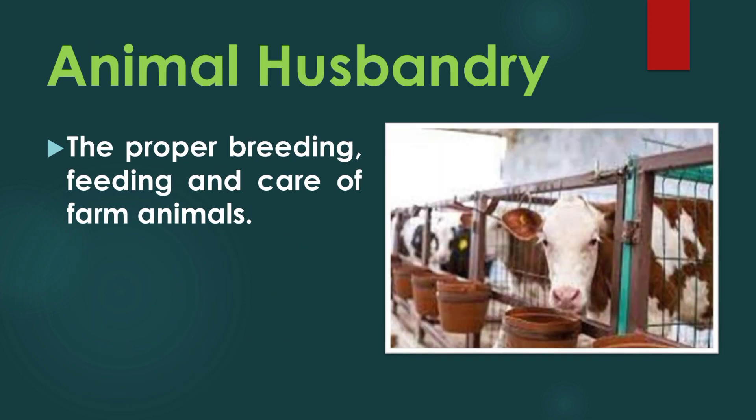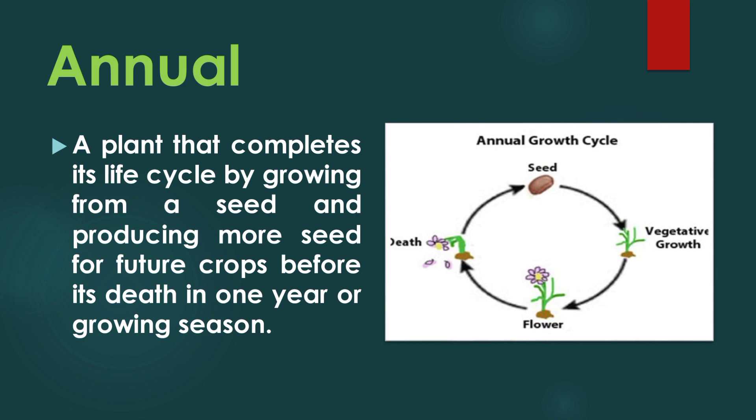Animal husbandry: the proper breeding, feeding, and care of farm animals. Annual: a plant that completes its life cycle by growing from a seed and producing more seed for future crops before its death in one year or growing season.